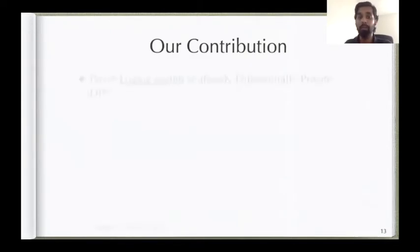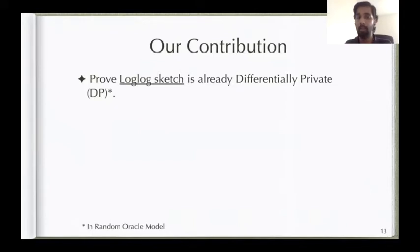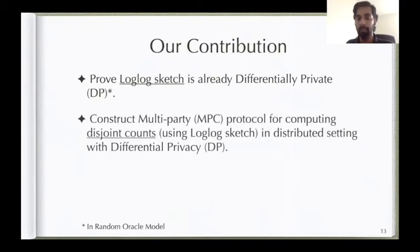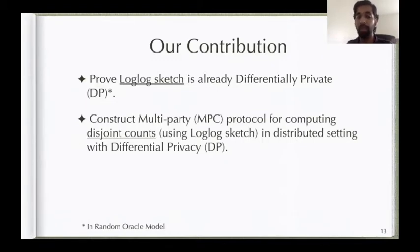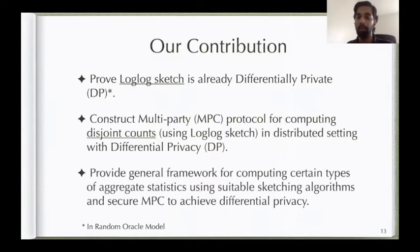Our contributions are: first, we show that a sketching algorithm called the log-log sketch is already a differentially private algorithm. Second, we extend this to the multi-party setting, showing how to use the log-log sketch to achieve differential privacy in a distributed setting for computing disjoint counts. Finally, we show this whole approach is a general framework where sketching algorithms combined with MPC and differential privacy yield efficient protocols for securely computing aggregate statistics.